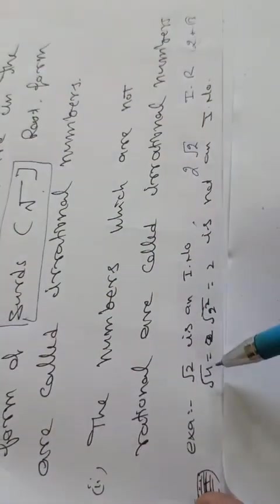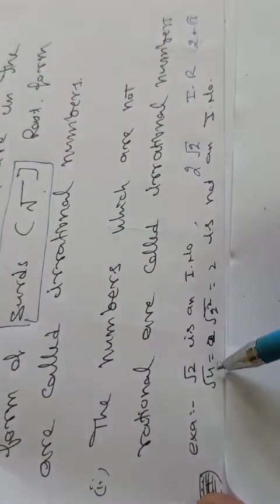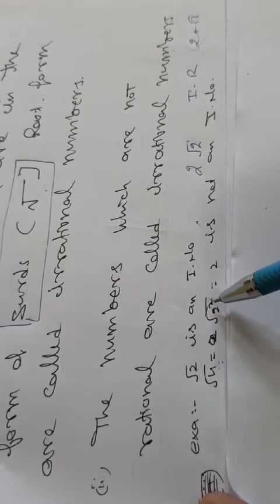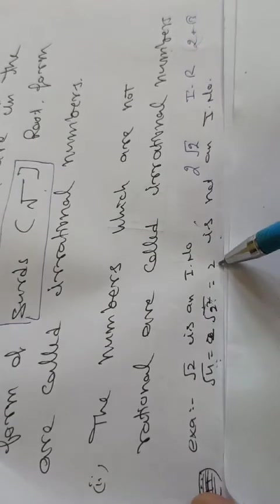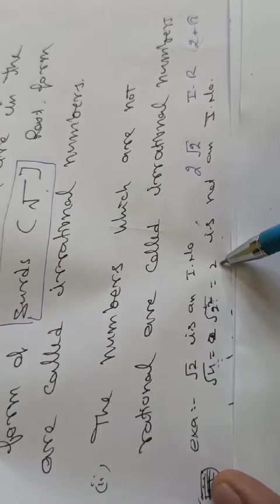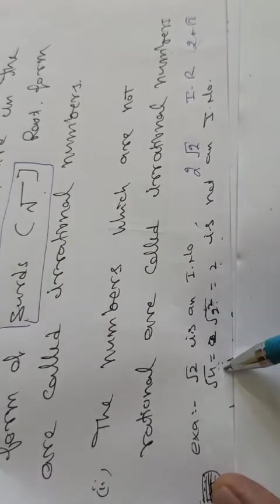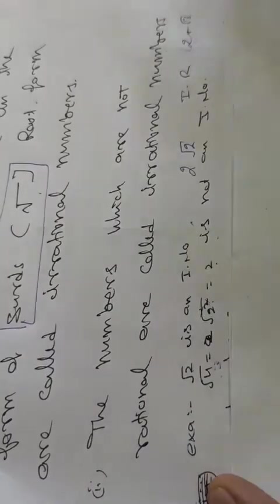Lekin maanleejiye main likhta hoon root 4. Root 4, 4 ko hum 2 square likhayenge, to square se square root kate jayega, to 2 bahar aa jayega. To yeh ek rational number hai, na ki irrational number. Root 4 is not an irrational number, this is a rational number.